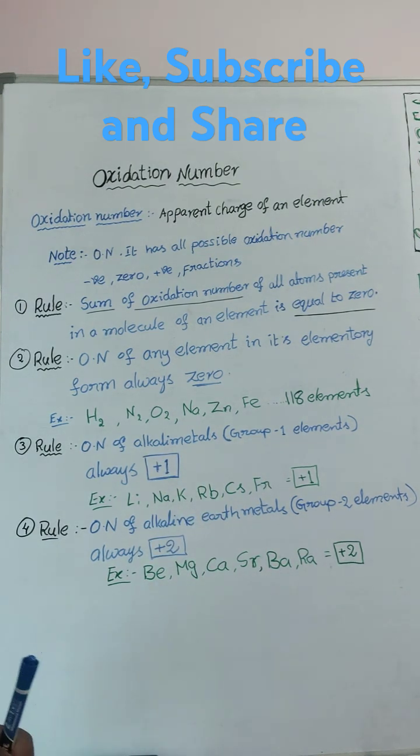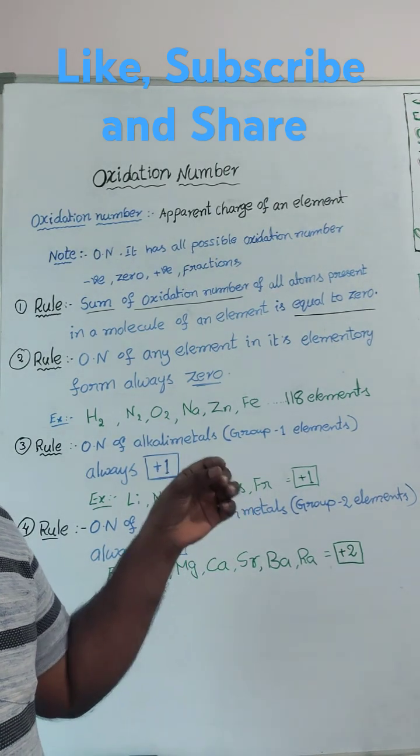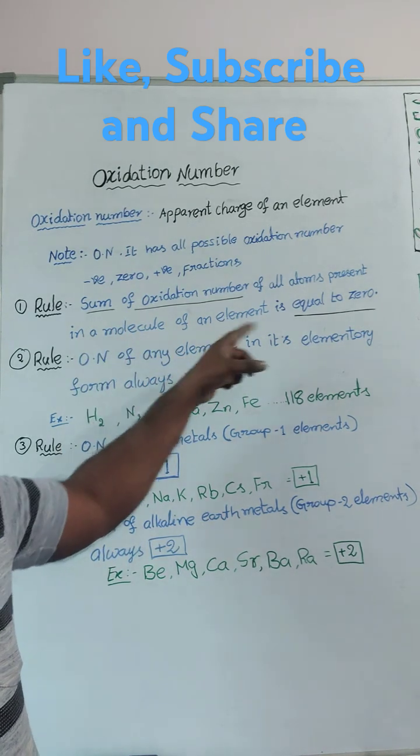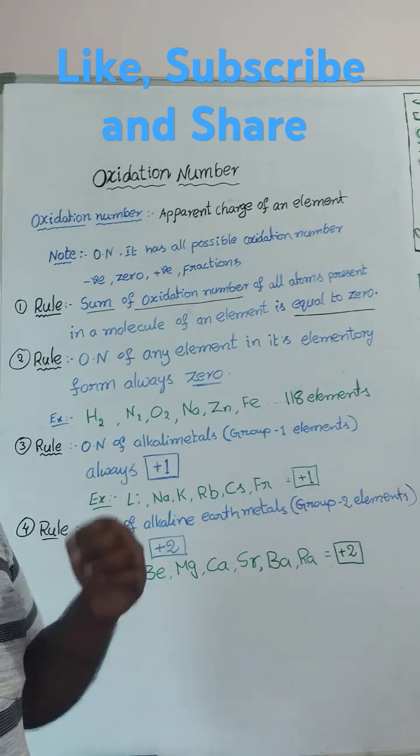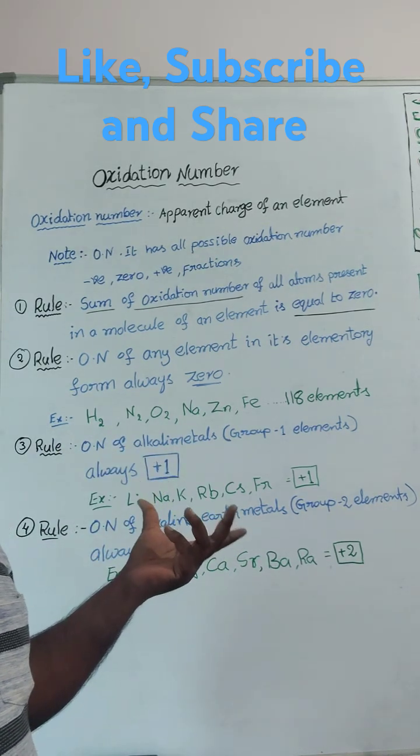Excellent. I hope you understood, so four rules total to be covered. First rule, oxidation number of all the elements in its molecule is equal to 0. Second rule, oxidation number of any element in its elementary form always 0.